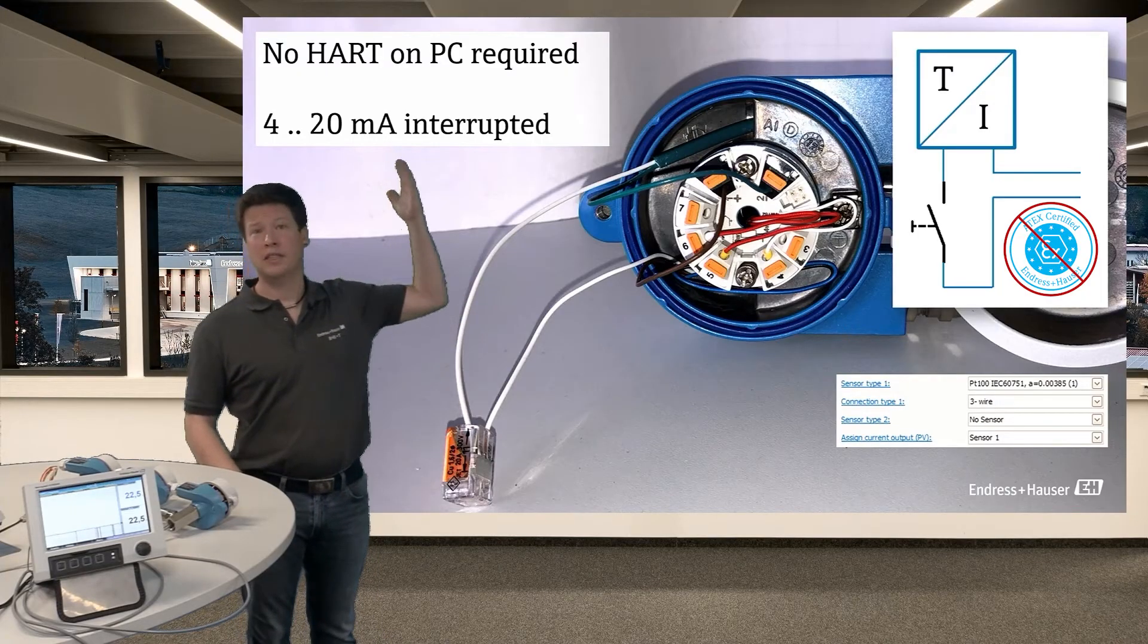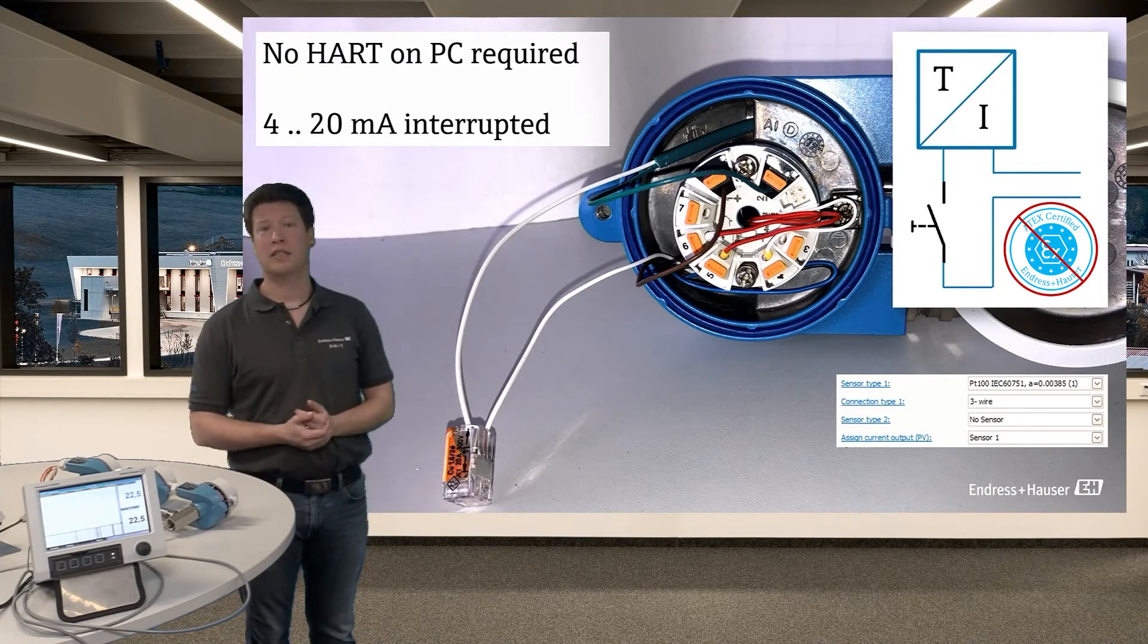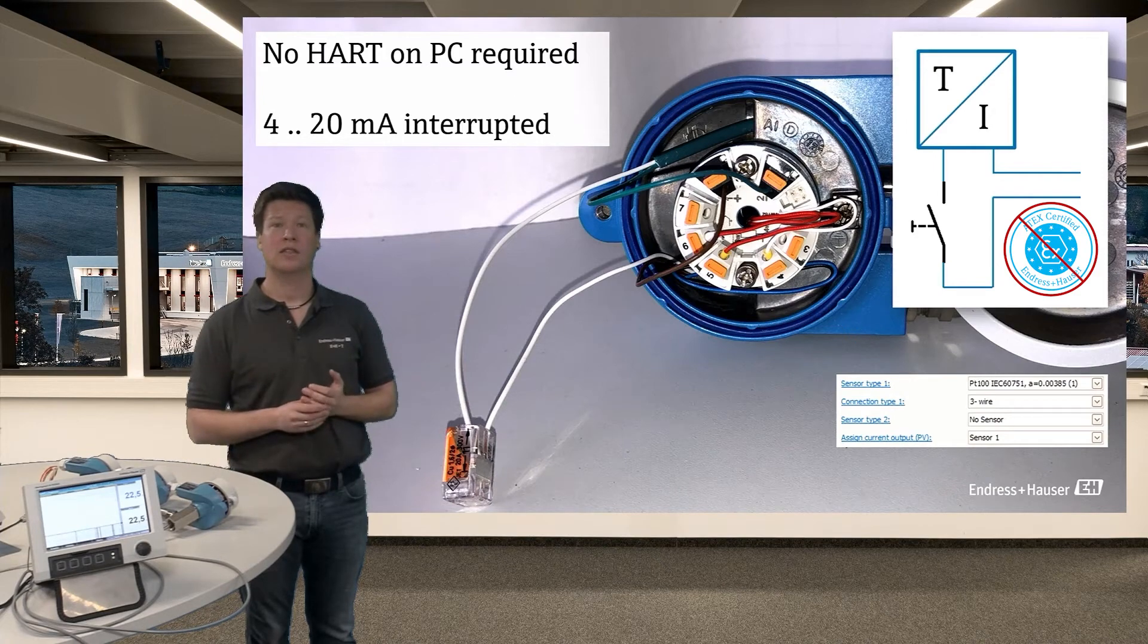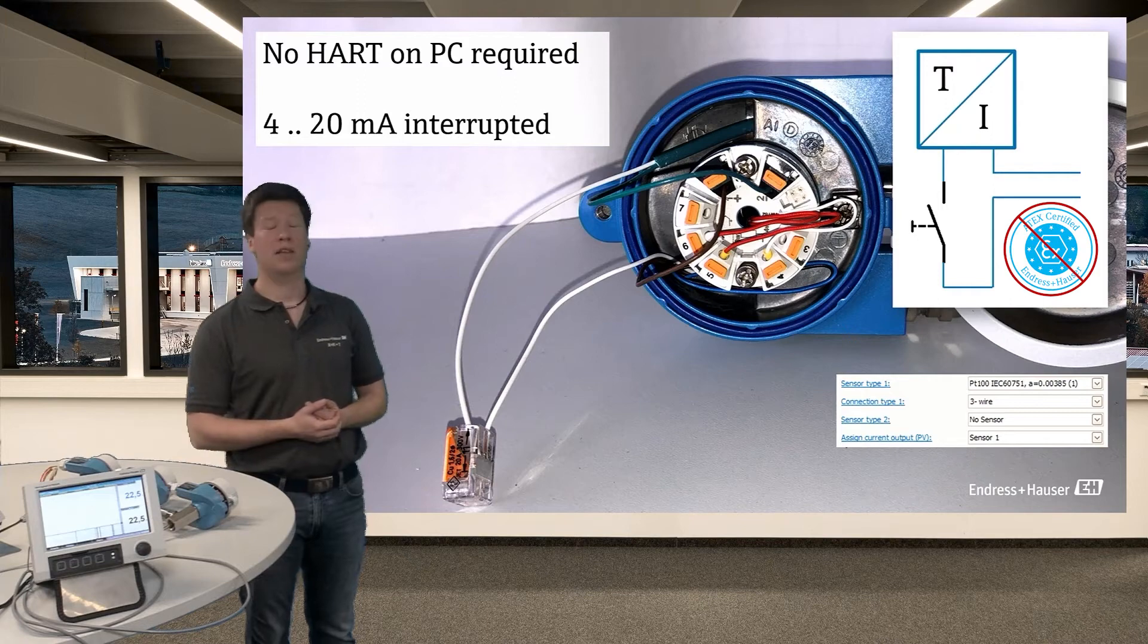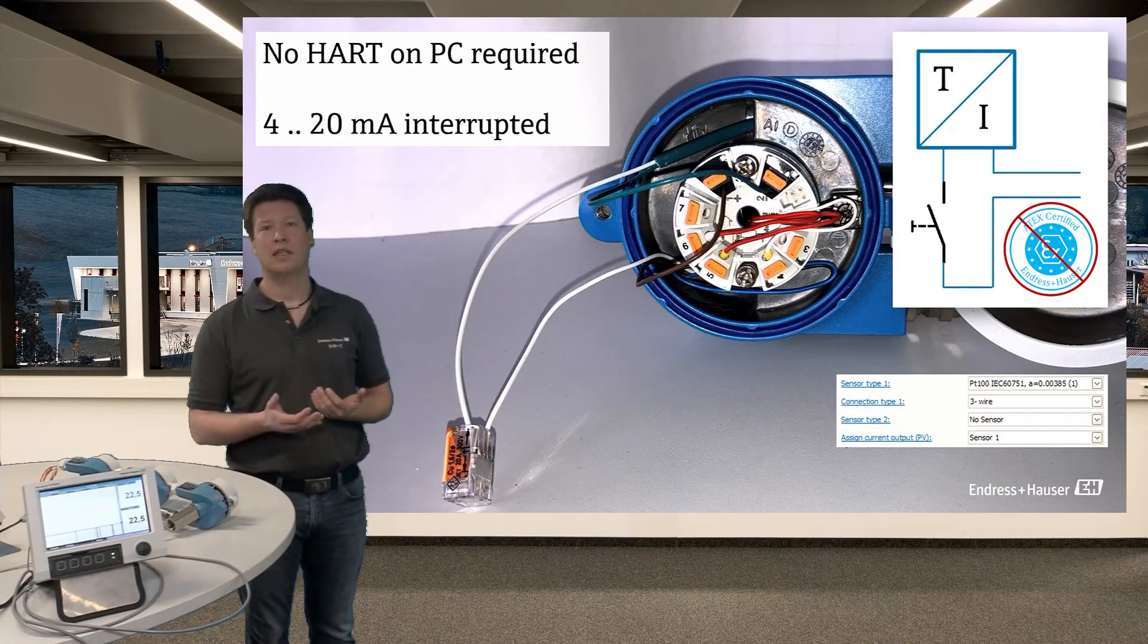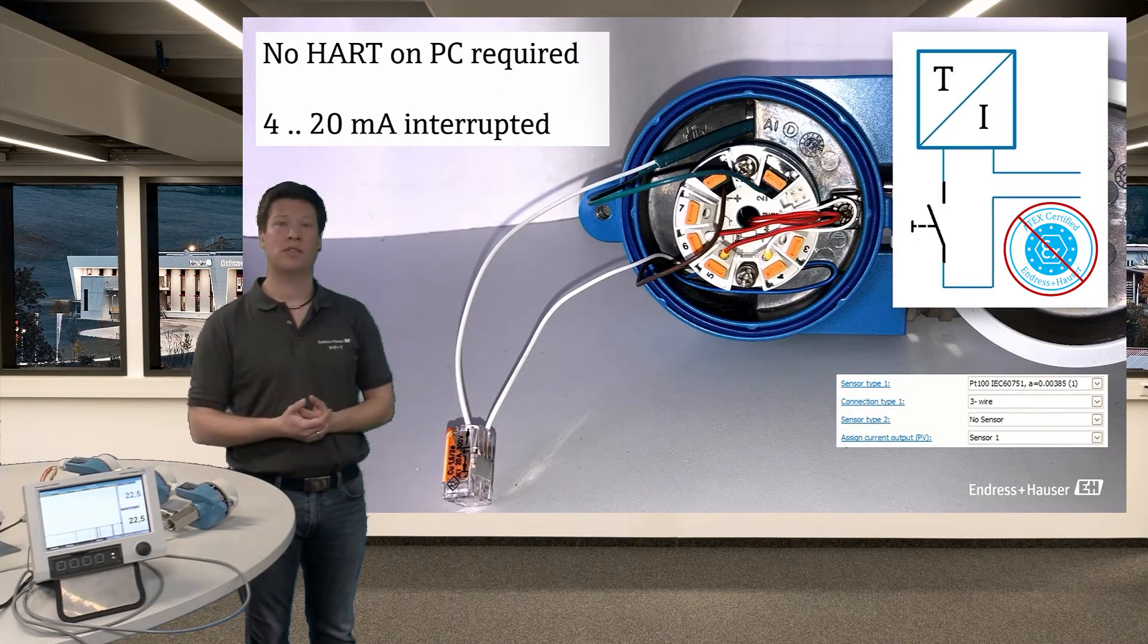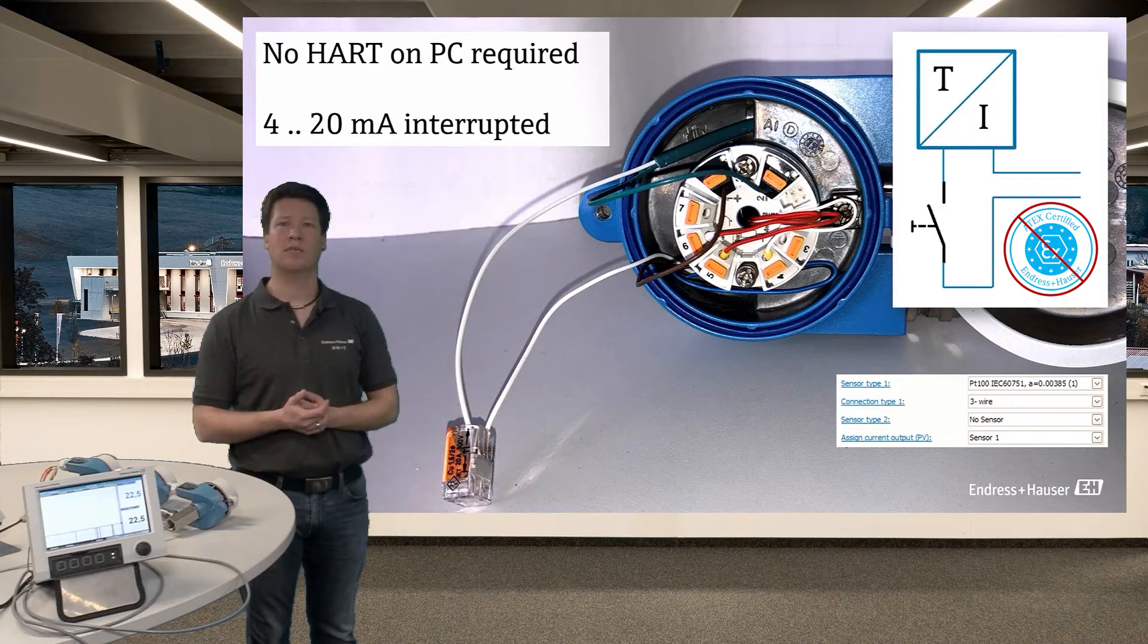Benefit is that we don't need the HART signal to be interpreted on the PLC. So no intelligent HART PLC required. The bad point about this is that we don't have a temperature signal anymore as soon as the pressure switch is activated.